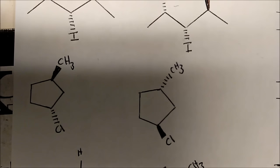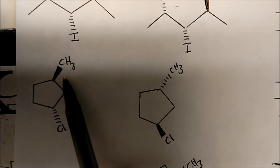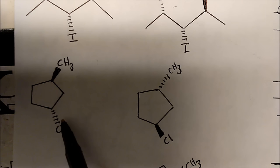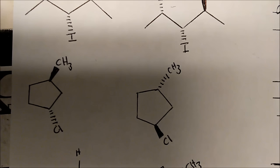How about this one? Looking at this molecule, we notice there are two stereocenters. Notice how both stereocenters change — the CH3 goes from a wedge to a dash, and the chlorine goes from a dash to a wedge. Any time all your stereocenters change in this fashion, that will always give you enantiomers.